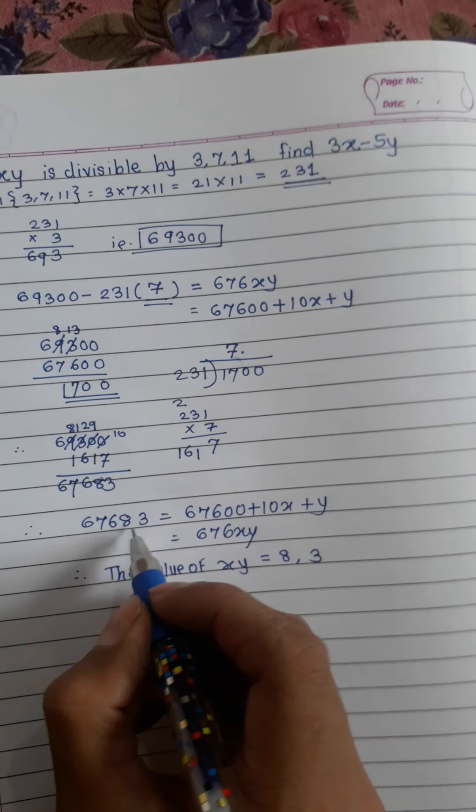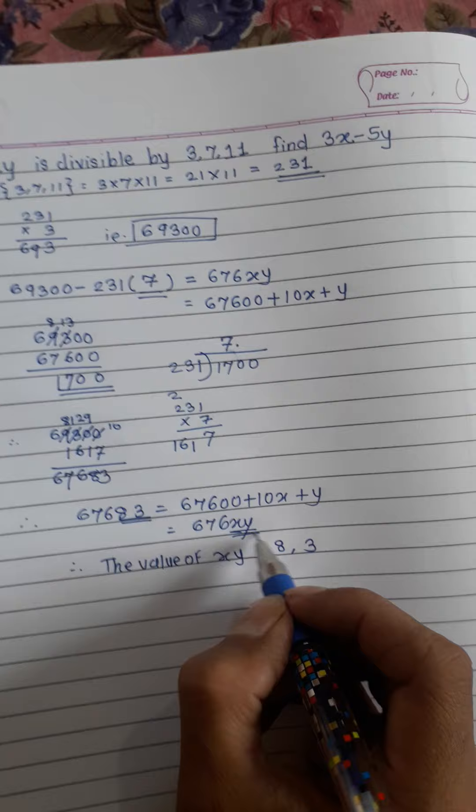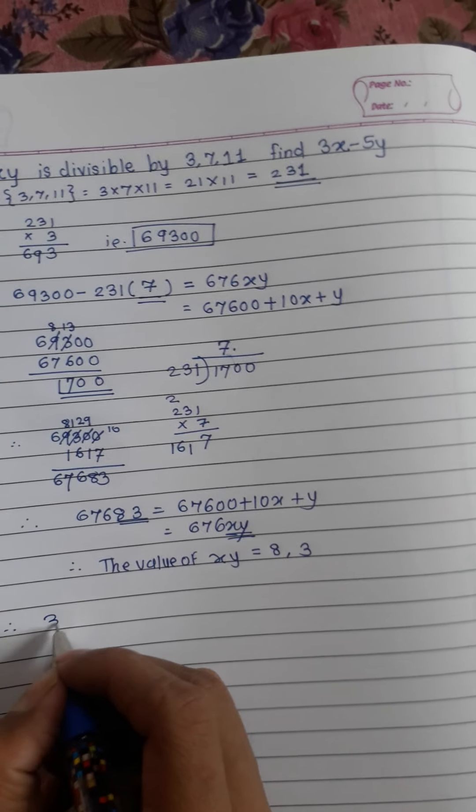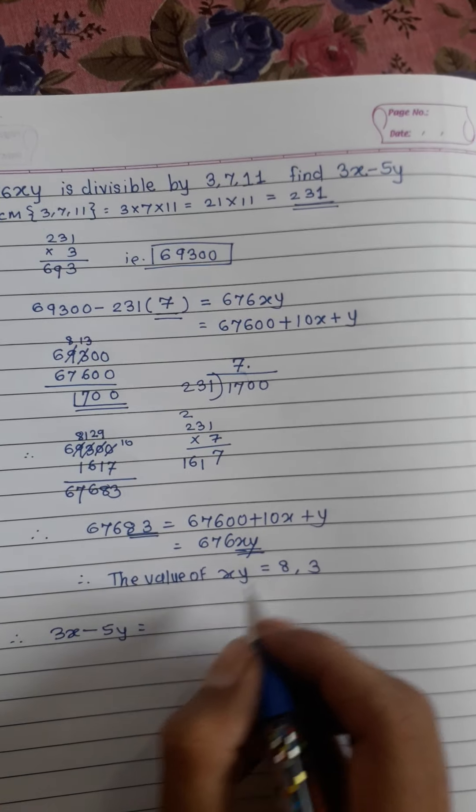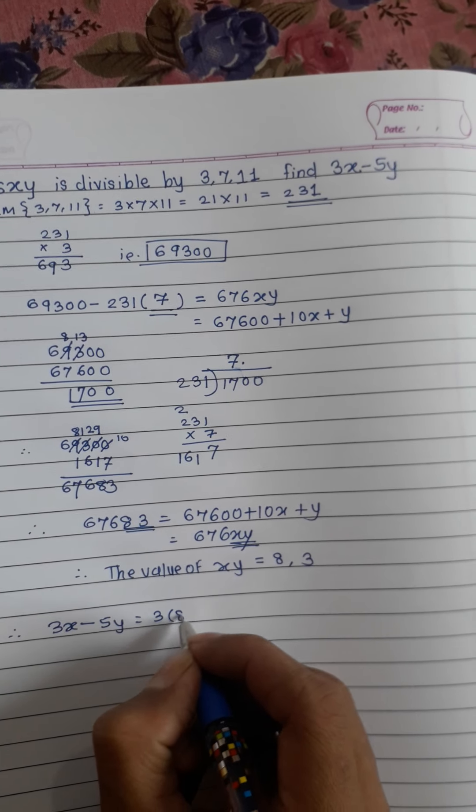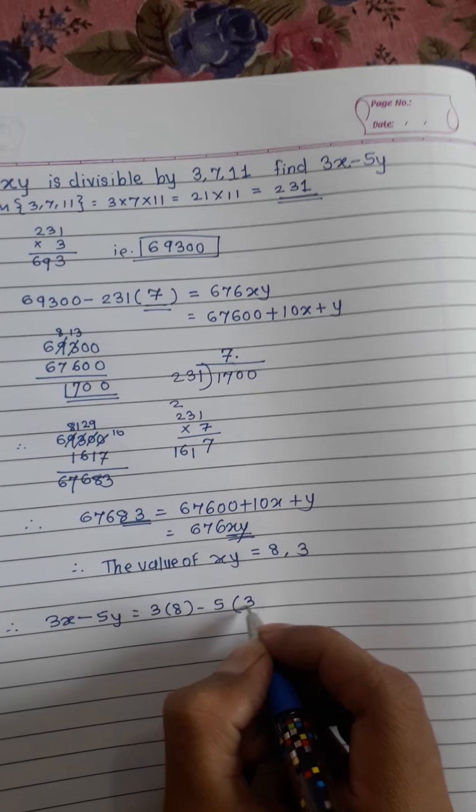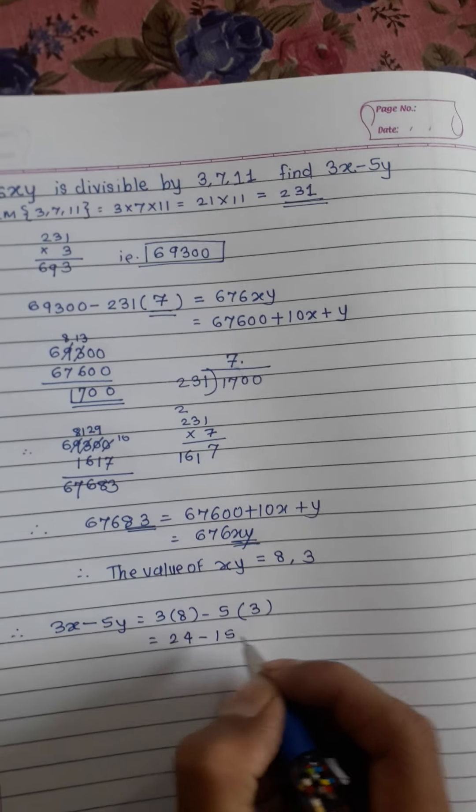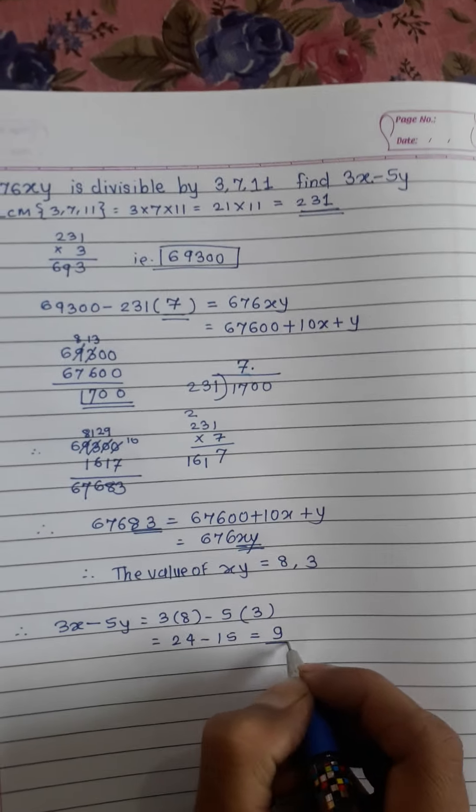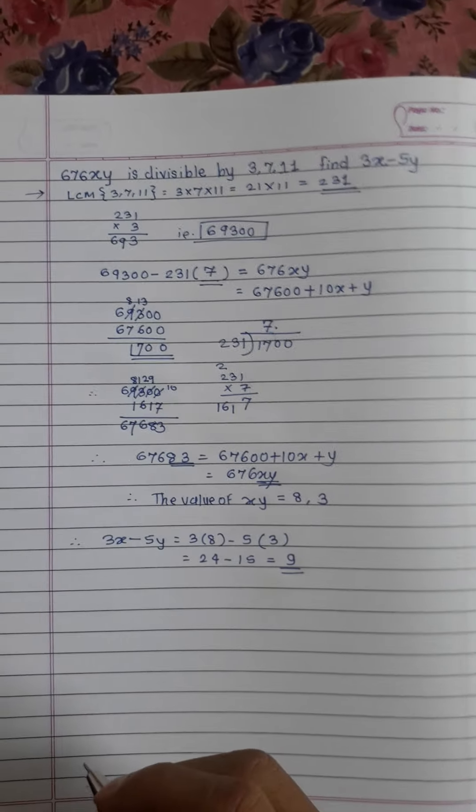is 3. Therefore, 3X minus 5Y is equal to 3 into 8 minus 5Y is 3. 3 times 8 is 24, minus 3 times 5 is 15. The answer is 9. Thank you friends, hope